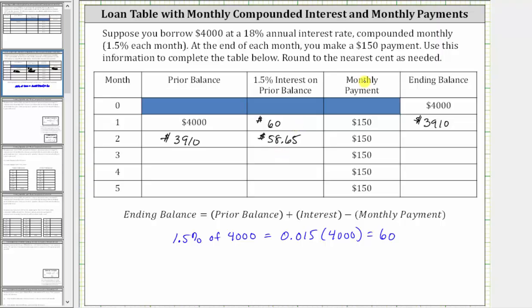Then you make a payment of $150. Therefore the ending balance at the end of month two is 3,910 plus 58.65 minus the payment of 150, which is equal to $3,818.65.